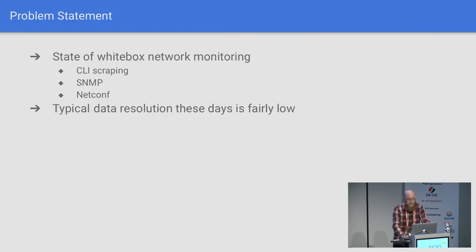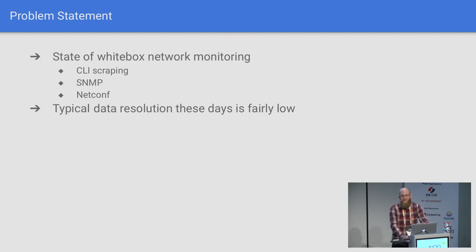Problem statement: the state of white-box network monitoring that most people generally use is either CLI scraping, SNMP, or some NetConf stuff, and there's one problem with this — the data resolution in the monitoring system and time-series databases is fairly low. Who in this room has timestamps of averages of five minutes? Who has one minute? 30 seconds? Less than 30 seconds? Who would like to have better fine-granular timestamps for the monitoring data? That's quite a few. Okay, let's talk about this.